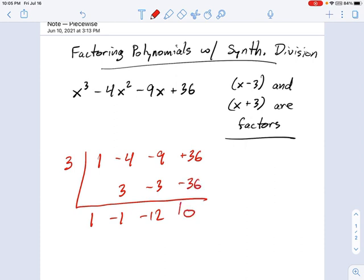So look at that. We've got a remainder of 0, which is good because I told you that x minus 3 was a factor, and if you had a remainder that was not 0, then you'd know I was a liar.